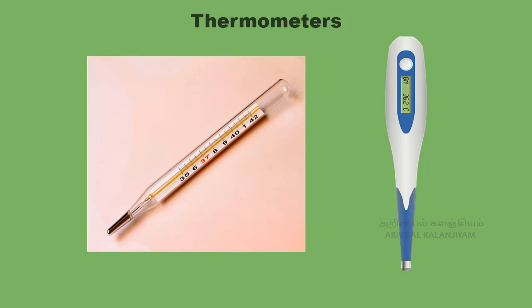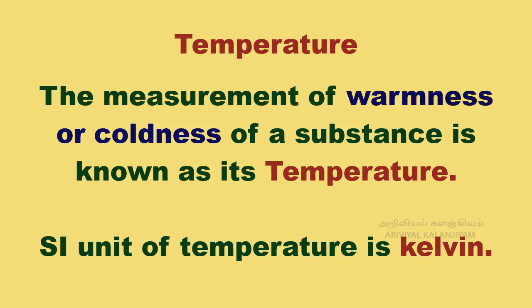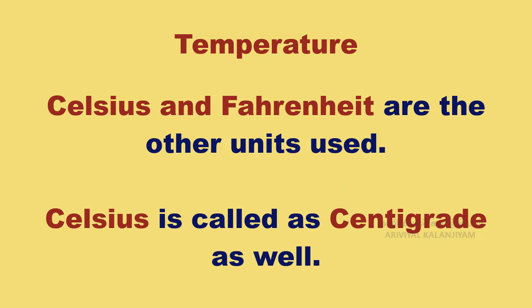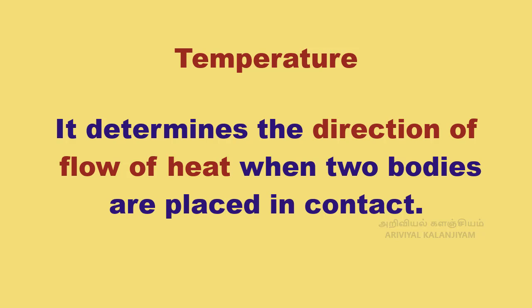Thermometers are used to measure temperature accurately and quantitatively. Temperature. The measurement of warmness or coldness of a substance is known as its temperature. The SI unit of temperature is Kelvin. Celsius and Fahrenheit are the other units used. Celsius is called centigrade as well. It determines the direction of flow of heat when two bodies are placed in contact.